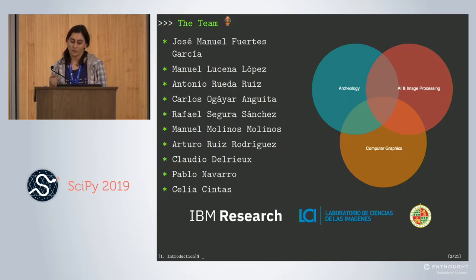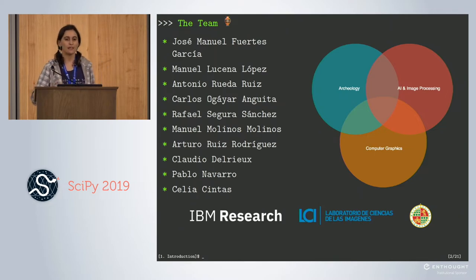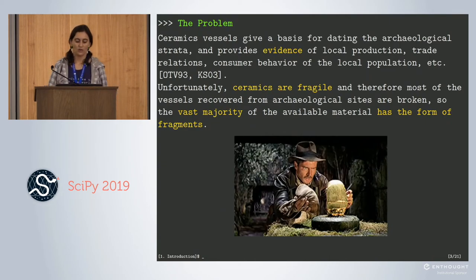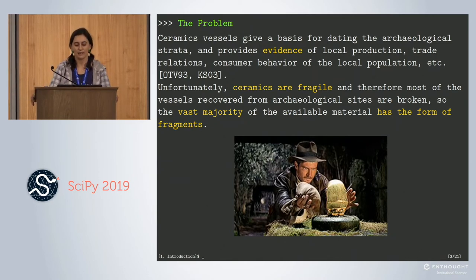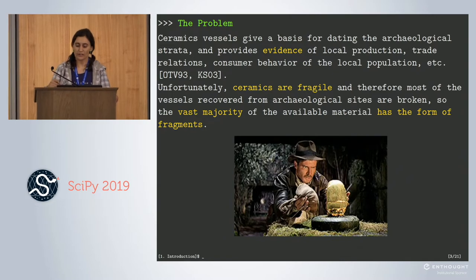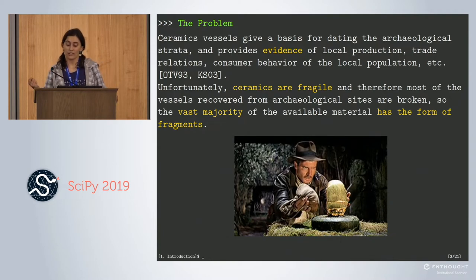I was in the computer science department, but they already had existing research with their archaeological institute in the same city. They have a lot of research around visualization for archaeology, augmented reality, ML, and decision support systems. It's a broad spectrum of research, and we are only talking about one part of it.